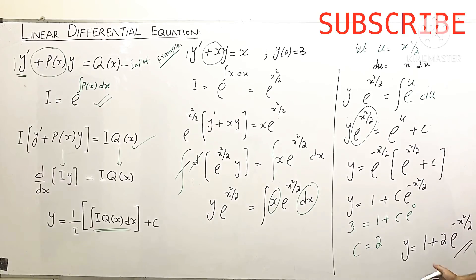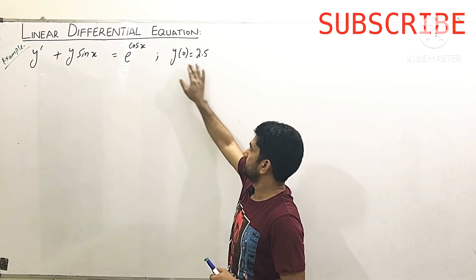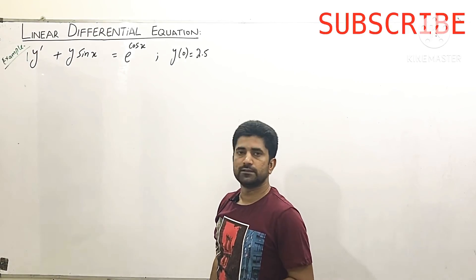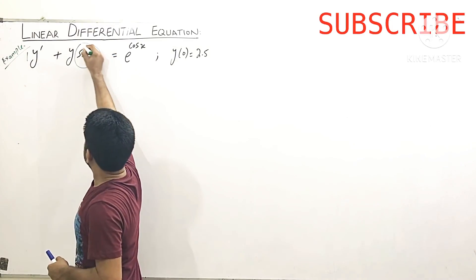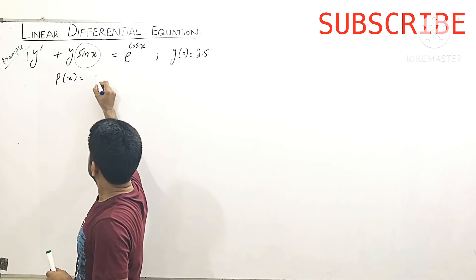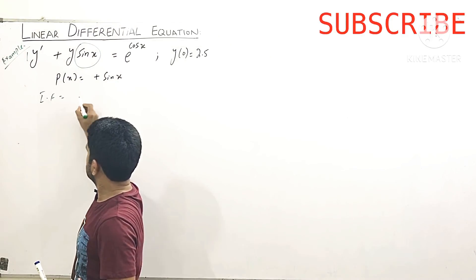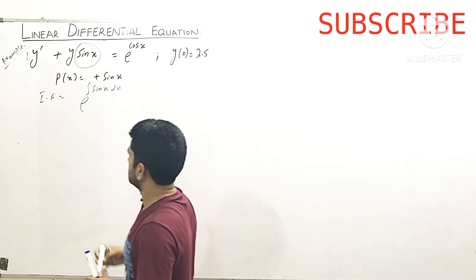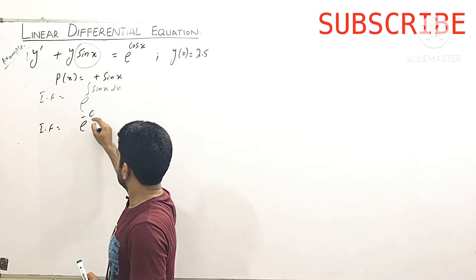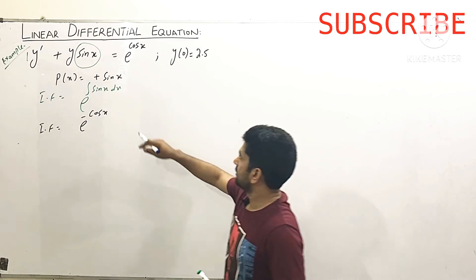Example 2: y' + y·sin(x) = e^(cos x) with initial condition y = 2.5 when x = 0. We see that the coefficient of y' is 1, and the term present with y is sin(x), so P(x) = sin(x). The integrating factor is I = e^(∫sin(x) dx). We know the integral of sin is -cos, so the integrating factor becomes e^(-cos x).